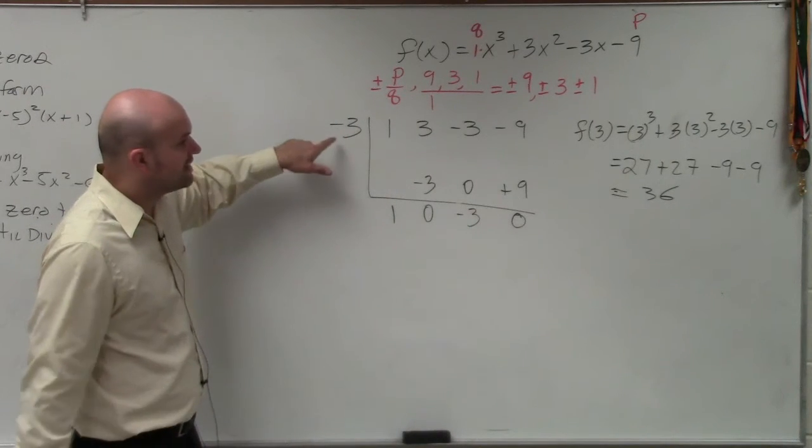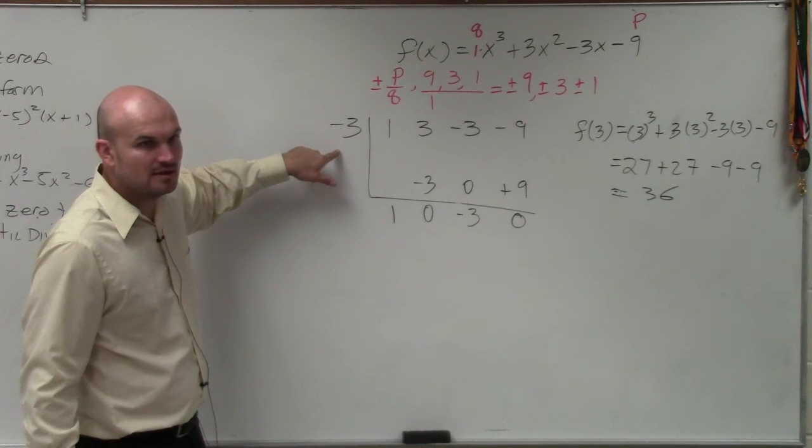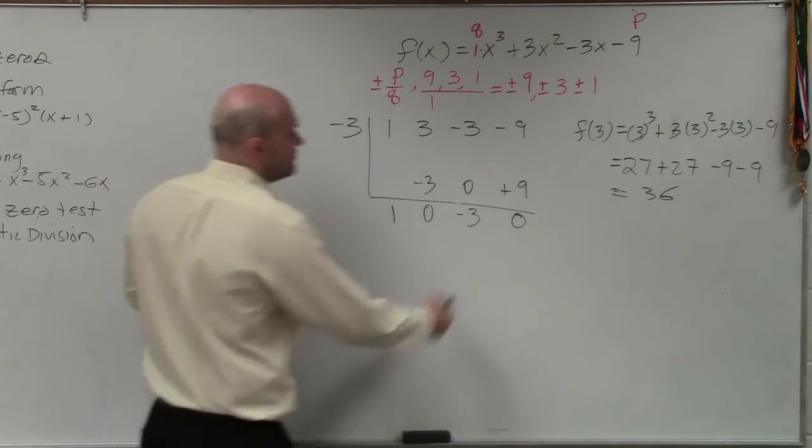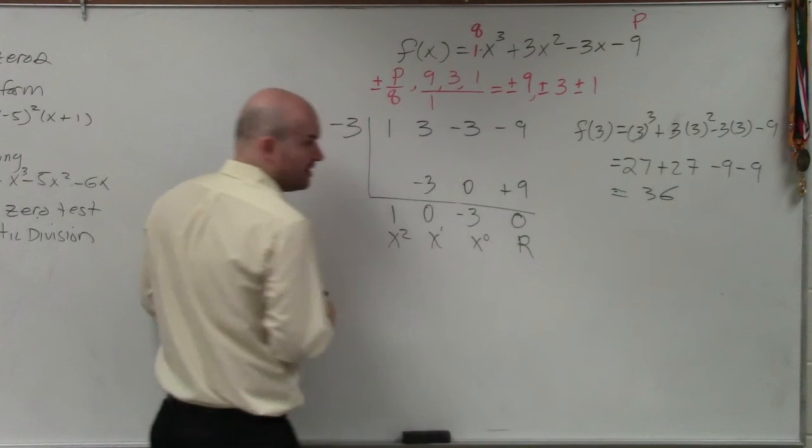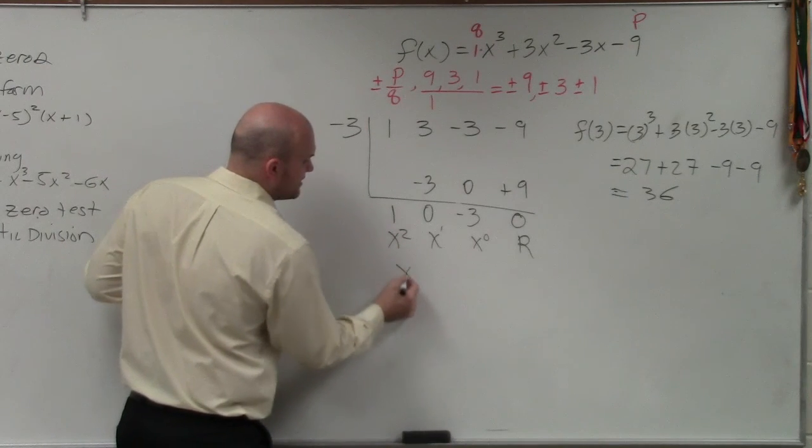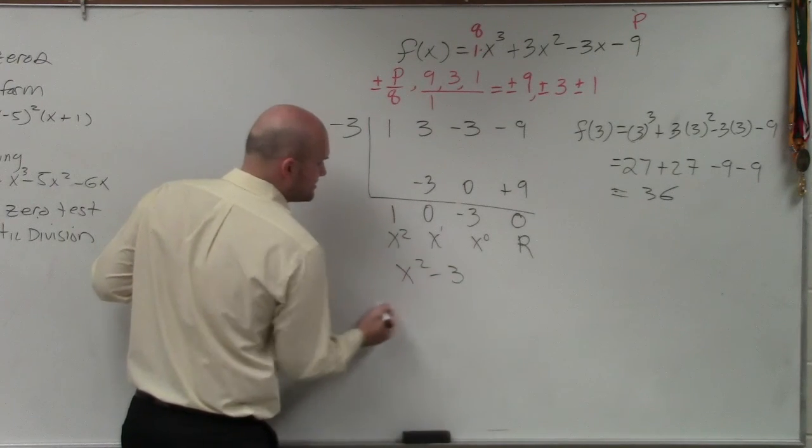So therefore, is x minus three a zero? Yes. Remainder, x to the zero, x to the first, x squared. So my factor is x squared minus 3.